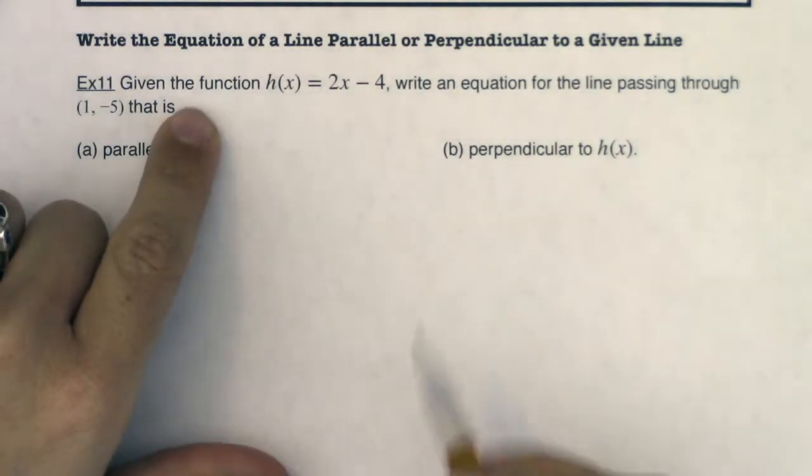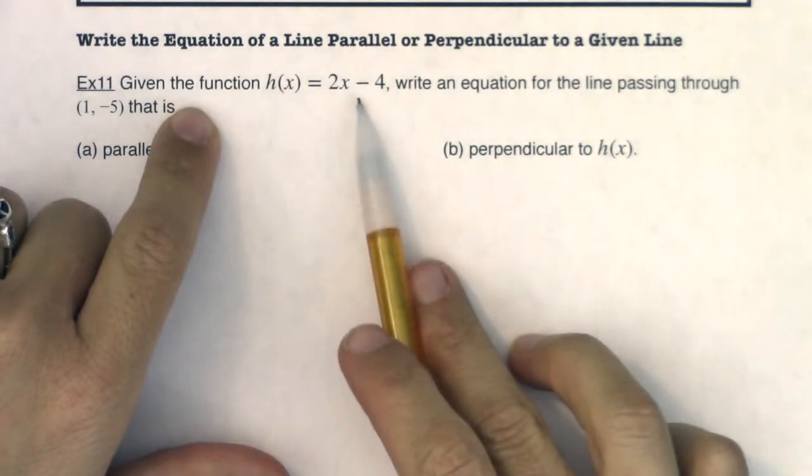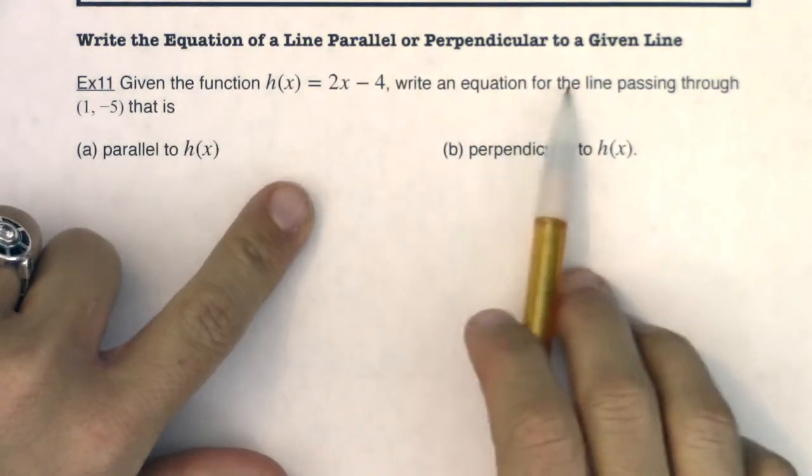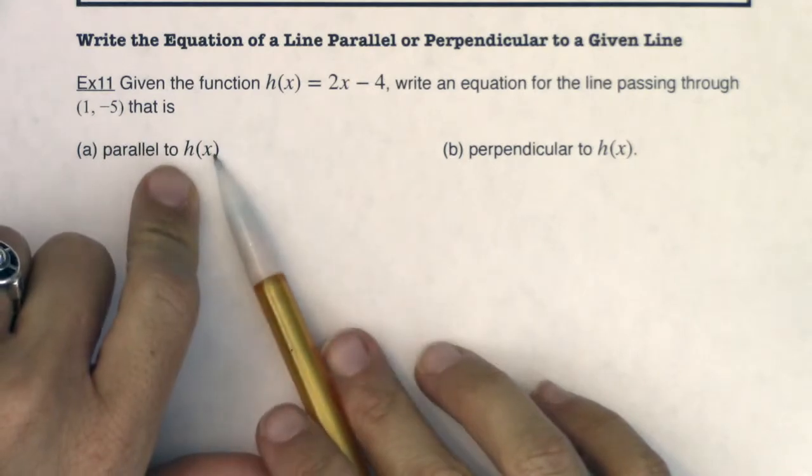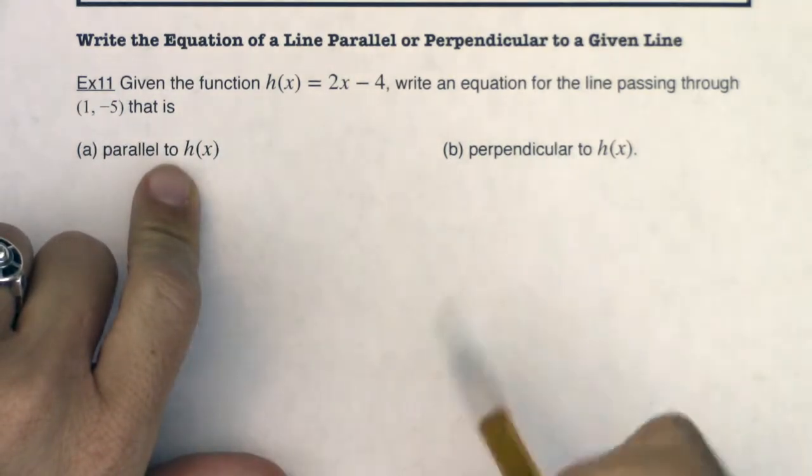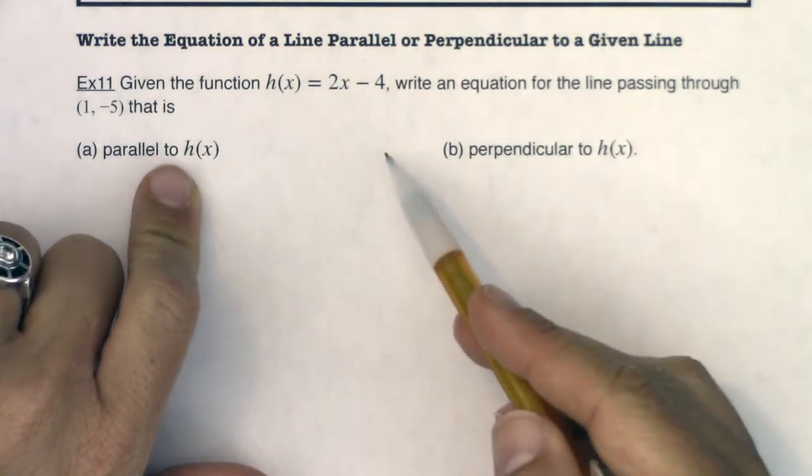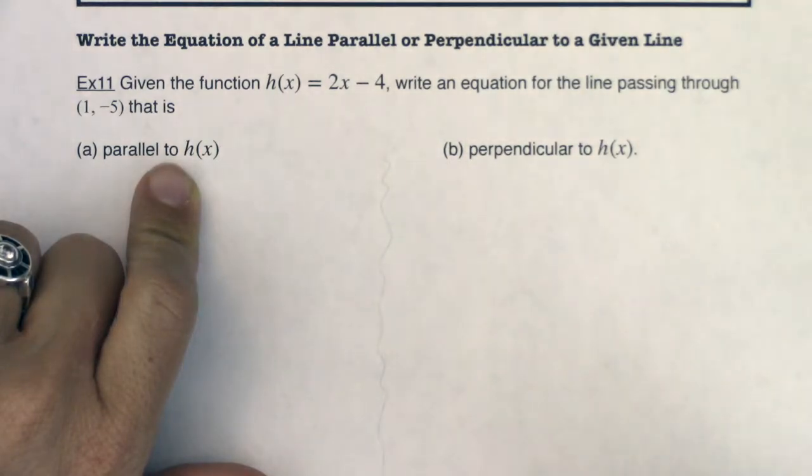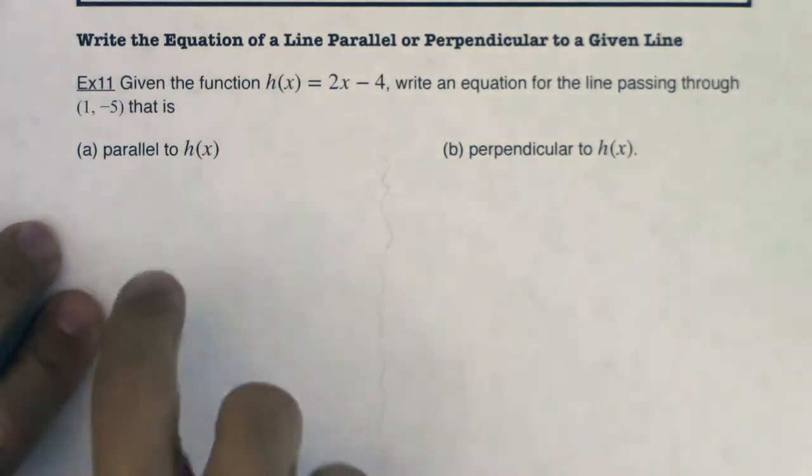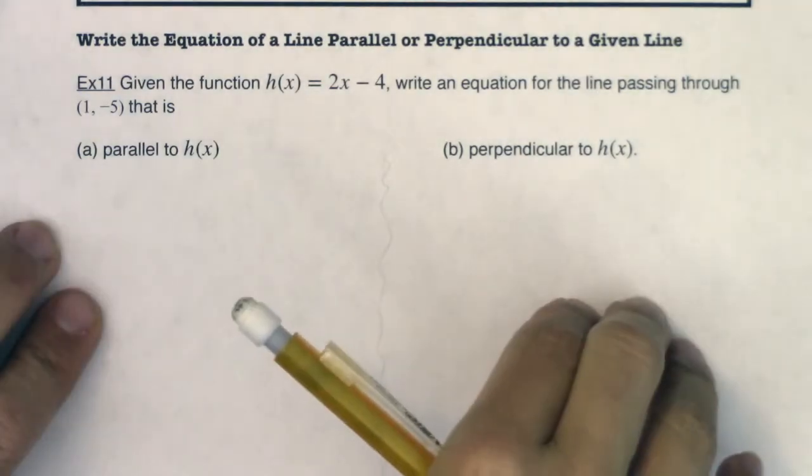So given the function h of x, which is equal to 2x minus 4, write an equation for the line passing through (1, -5) that is parallel to h of x and then we'll try one that is perpendicular to h of x. So I'm going to put a little separation squiggles here because I'm going to do this problem twice, one for parallel lines, one for perpendicular.